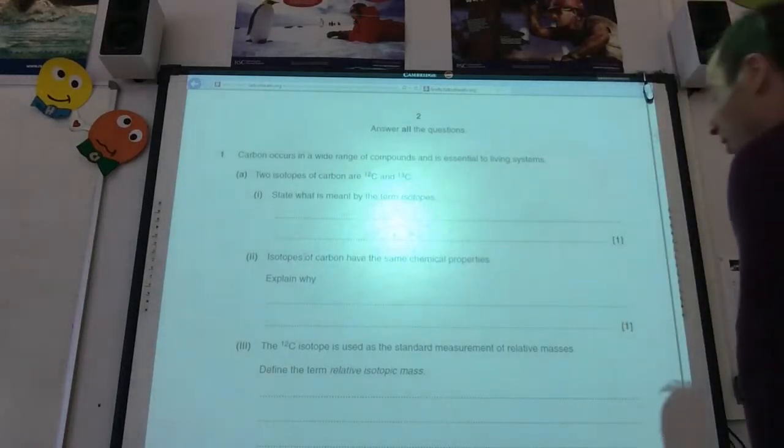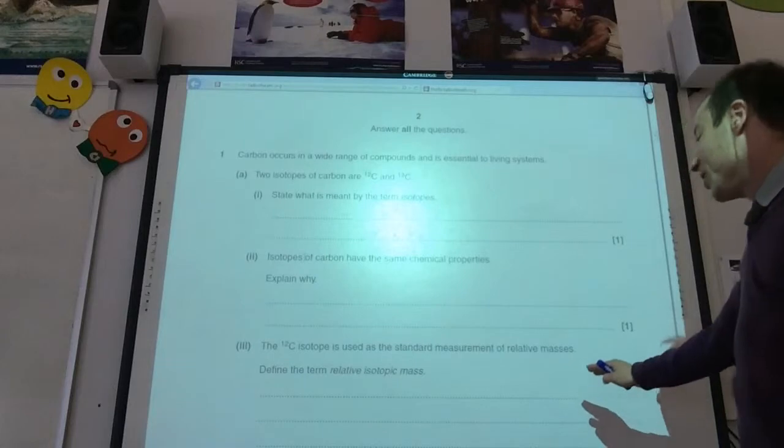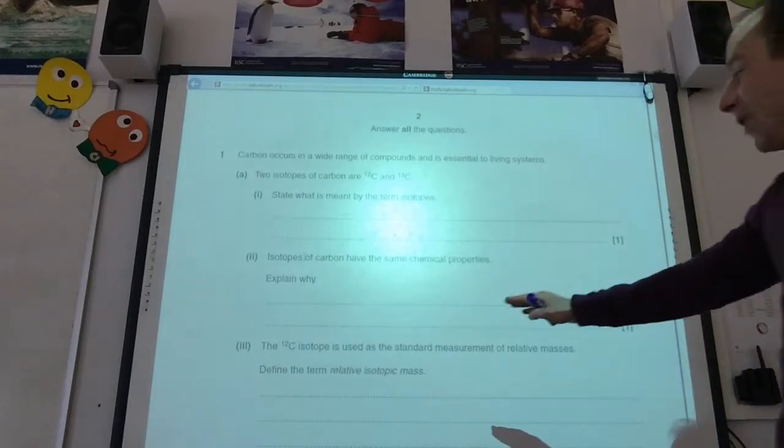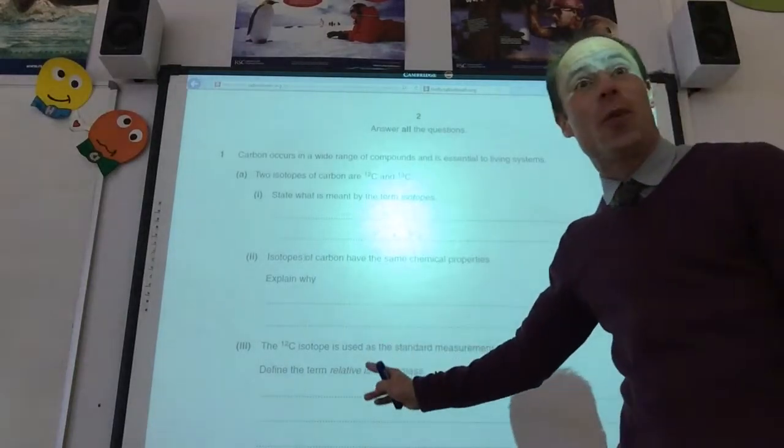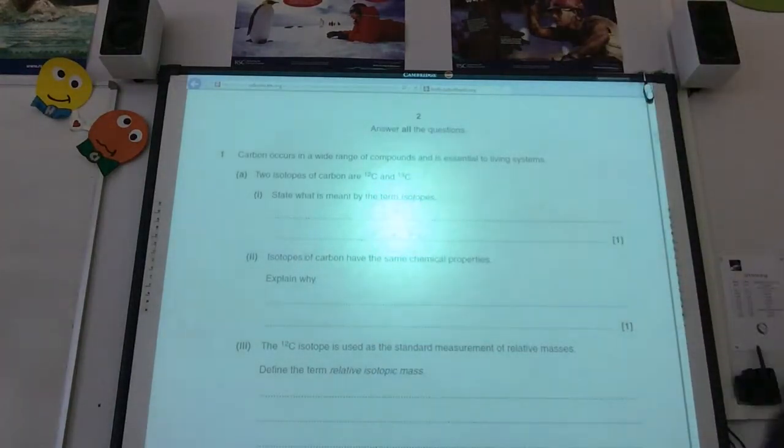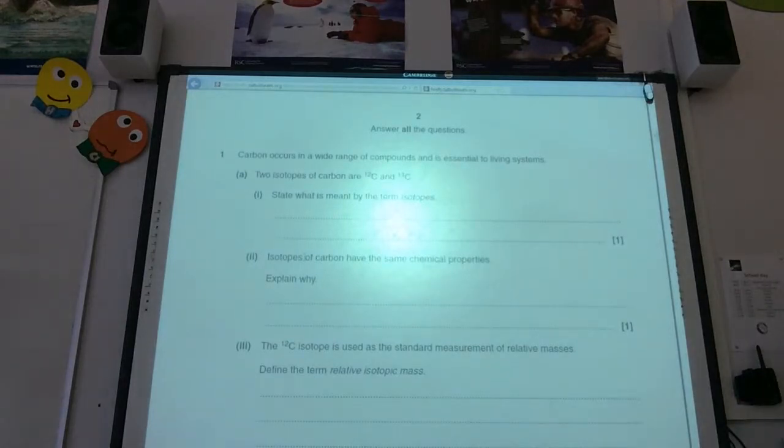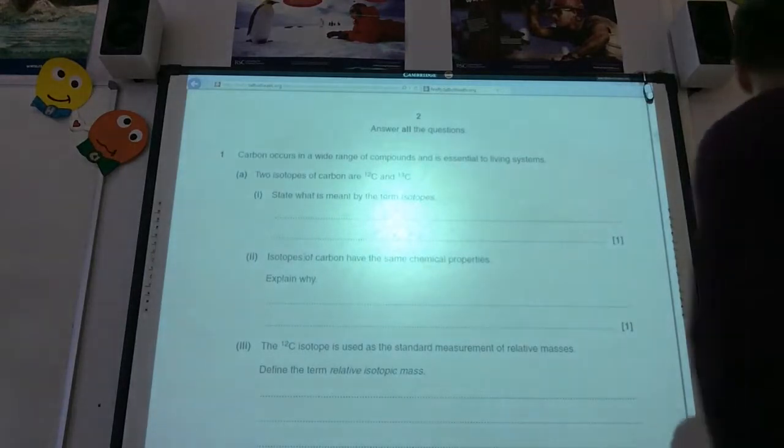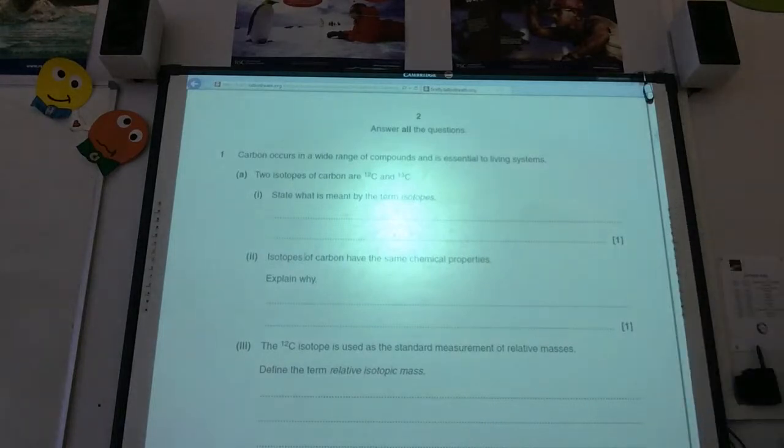The carbon-12 isotope is used as a standard measurement of relative mass. Define the term relative isotopic mass. So, for relative isotopic mass, it's the mass of an isotope compared to 1-12th the mass of carbon-12. Remember, that would always be a whole number.